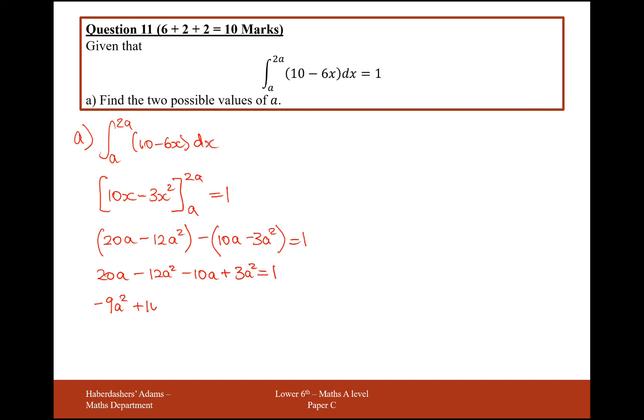So times by minus 1 to make the problem easier. And then factorize into two brackets and we're going to get 9a and a. And it's probably going to be a minus 1 and a minus 1 situation happening here. So a is going to equal either a ninth or a is going to equal 1.